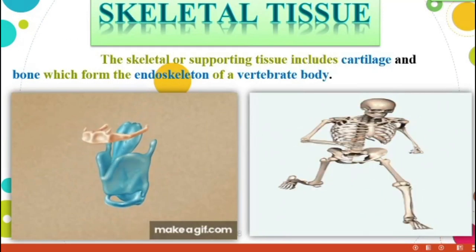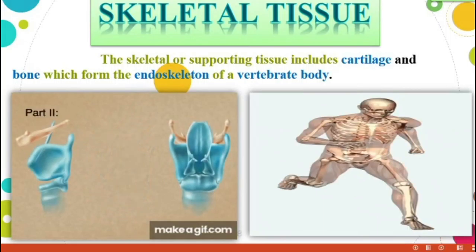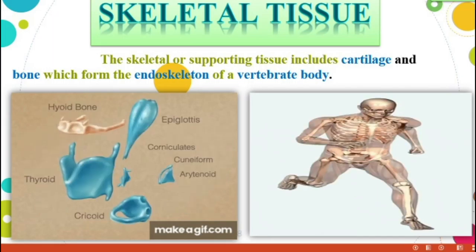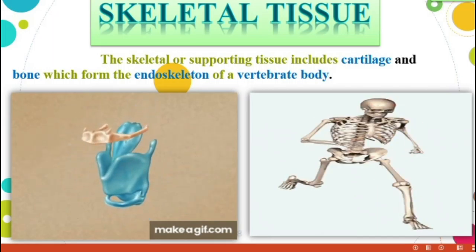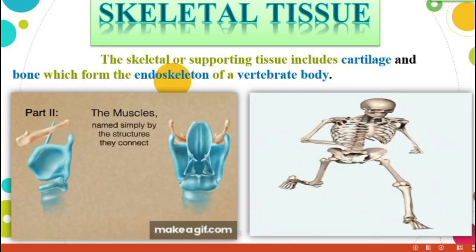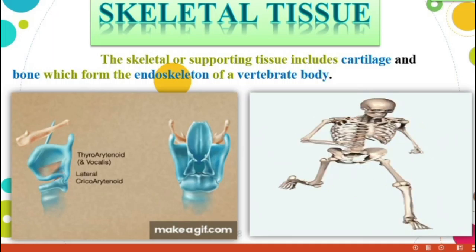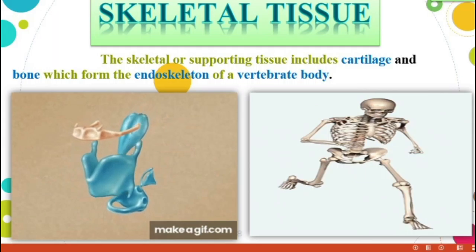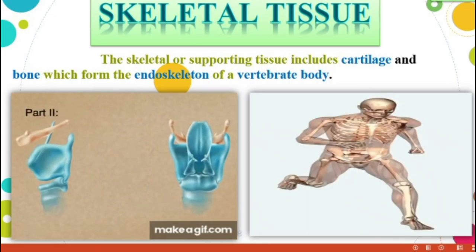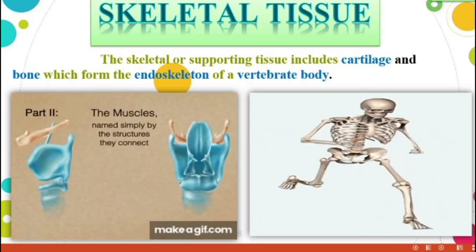Skeletal or supporting tissue includes cartilage and bone, which form the endoskeleton of the vertebrate body. Cartilage is a soft bone and bone is the hardest material. Where is it found? In the vertebrate body, meaning animals having a backbone. The bones are present inside the body only — this is the endoskeleton system. See both pictures.